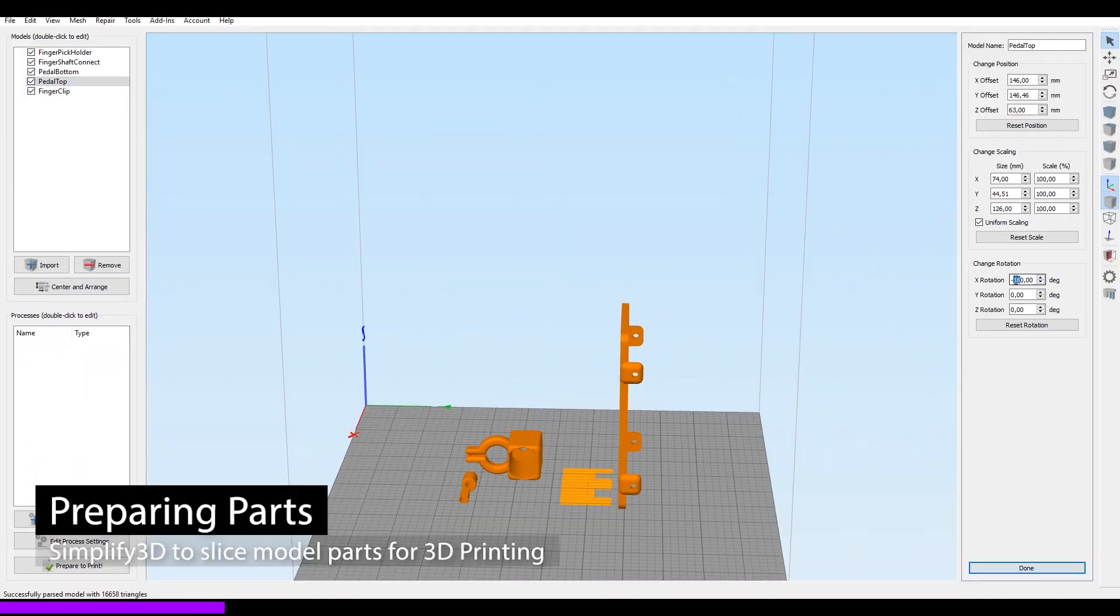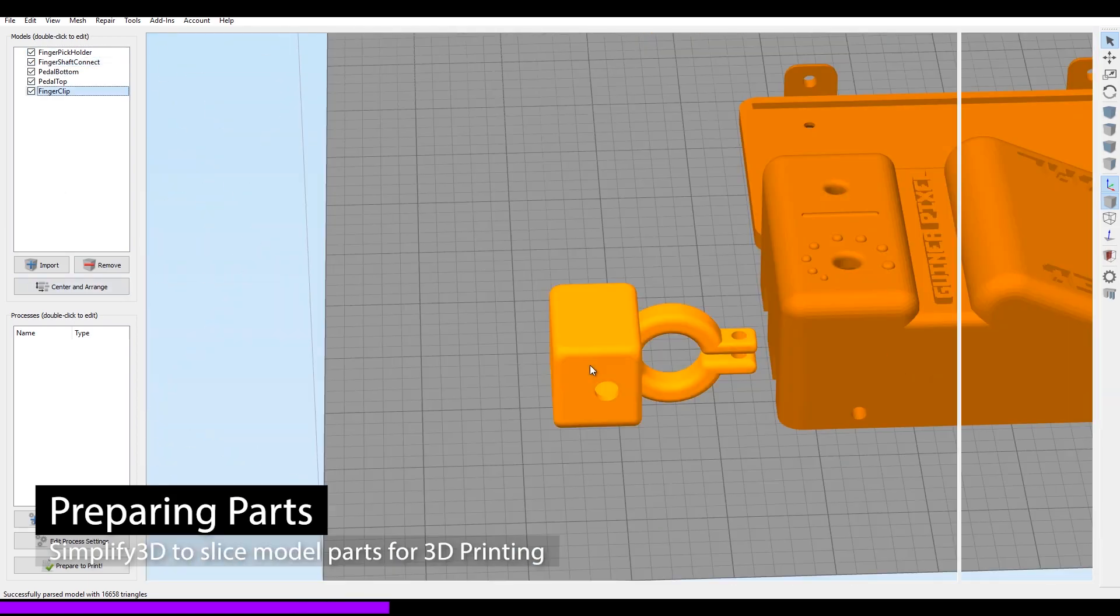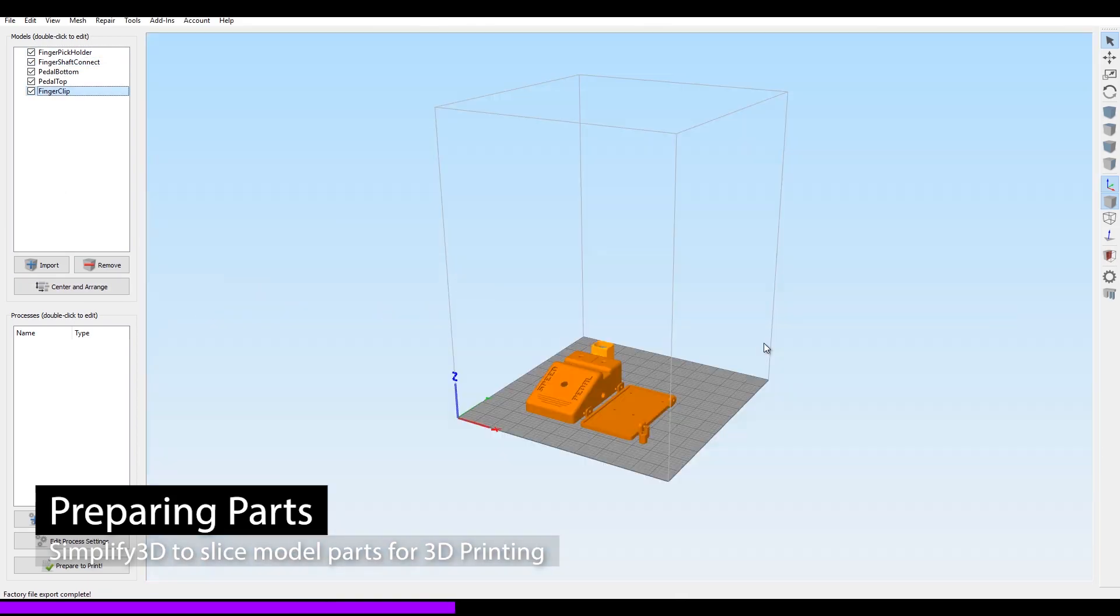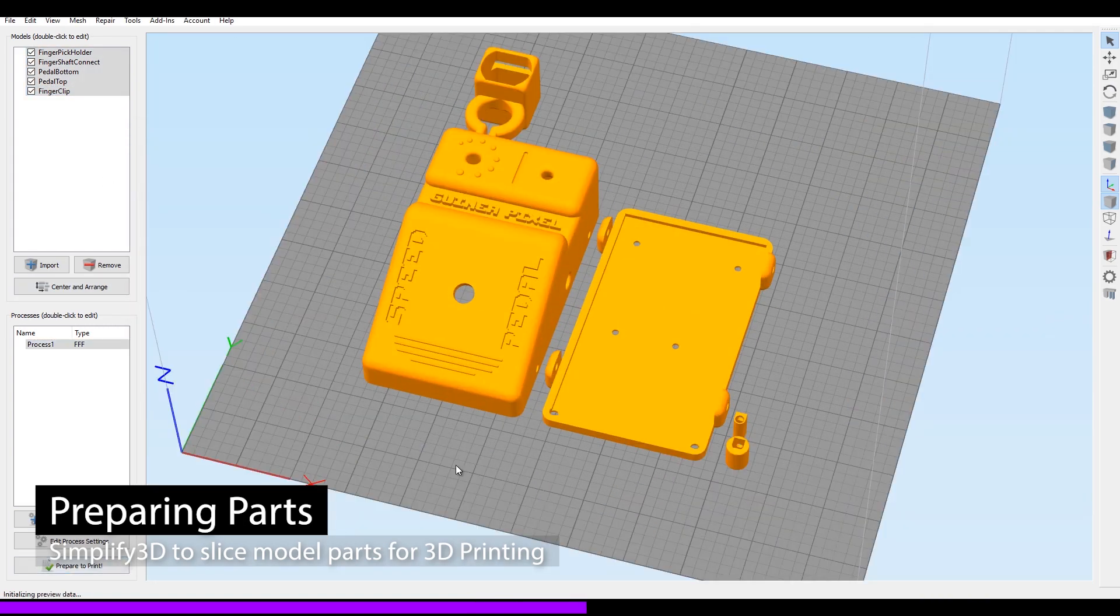I use Simplify 3D to slice all my exported model parts and prepare it for printing. You can always use different programs, but I find this the easiest in terms of settings, layout, and functionality.